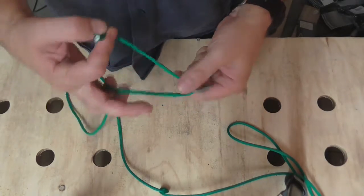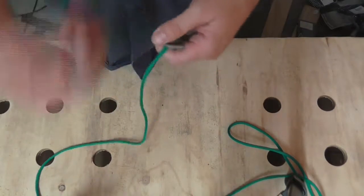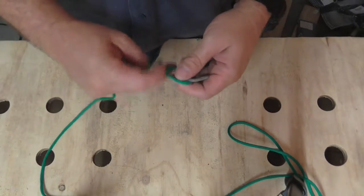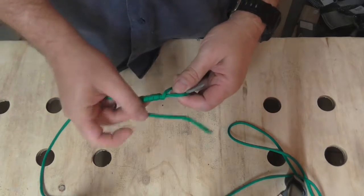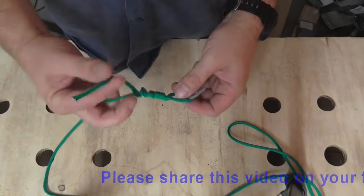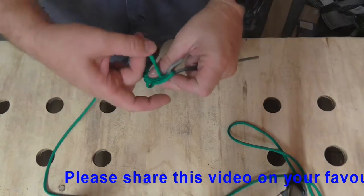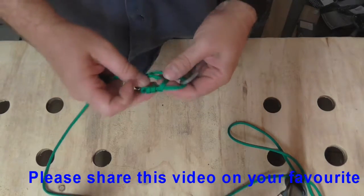We're going to wrap the line around itself two, three, four, five times minimum, and then we're going to pass the tag through the loop and then back through itself.